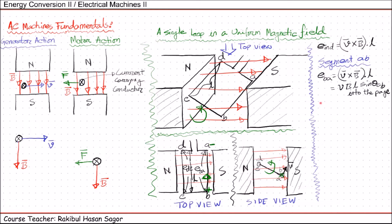Now let us consider the induced voltage in segment BC. For BC, the length L is in the plane of the page and V × B is perpendicular to L. So the effective length can be considered as zero, and the voltage in segment BC will be zero: E_CB = 0.